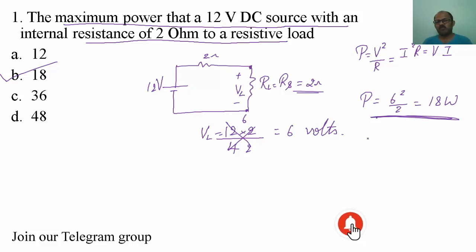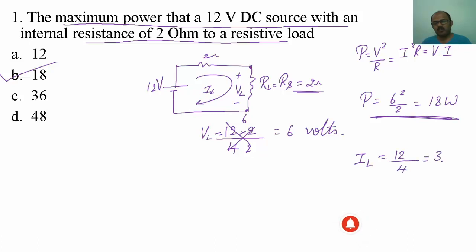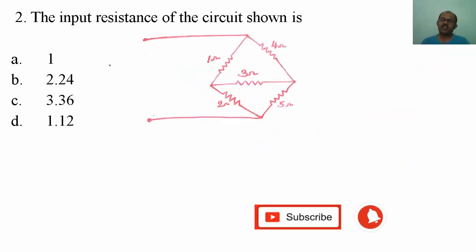One more method to verify: the current IL equals the total voltage divided by total resistance, that is 12 divided by 4, which equals 3 amperes. Substituting: 3 squared multiplied by 2 gives 9 times 2 equals 18 watts. Using V times I: 6 times 3 also gives 18 watts. All three methods give the same answer.